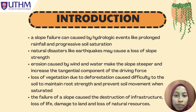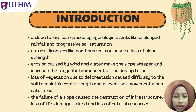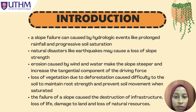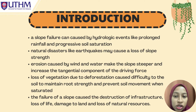A slope failure can be caused by hydrologic events such as prolonged rainfall and progressive soil saturation. Besides, natural disasters like earthquakes may trigger excessive soil movement and lead to the loss of slope strength. Furthermore, erosion caused by wind and water can make the slope steeper and increase the tangential component of the driving force.